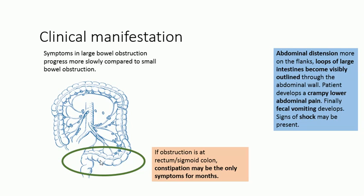Large bowel is present more peripherally compared to small bowel, which is more central, so abdominal distension is more on the flanks. As loops enlarge, you will be able to see the outline of the loops through the abdominal wall. The patient develops abdominal pain, and finally fecal vomiting — bacteria causing stasis degrades the contents, which ultimately come out. Signs of shock may also be present if perforation occurs, causing hemodynamic instability.